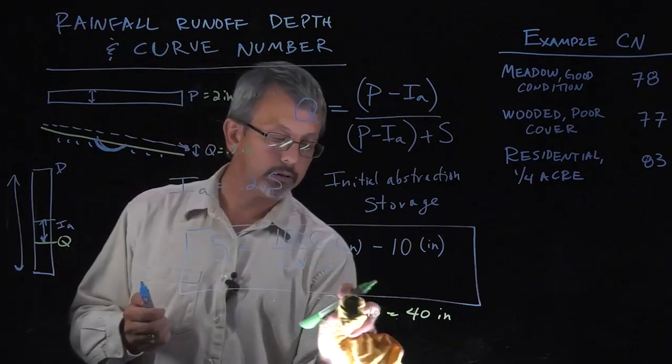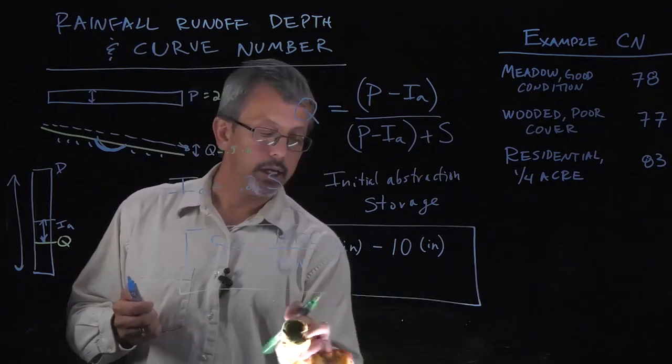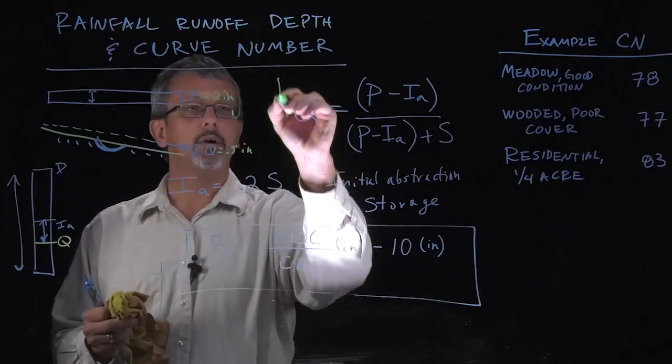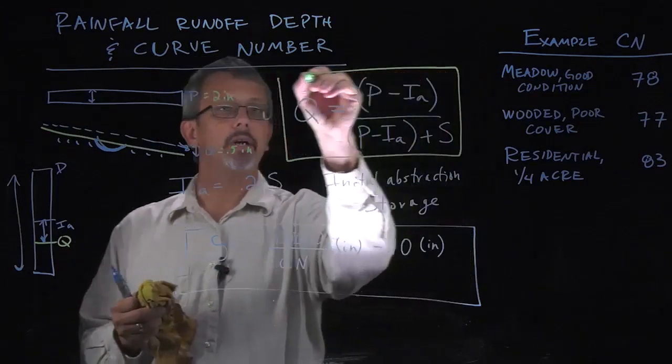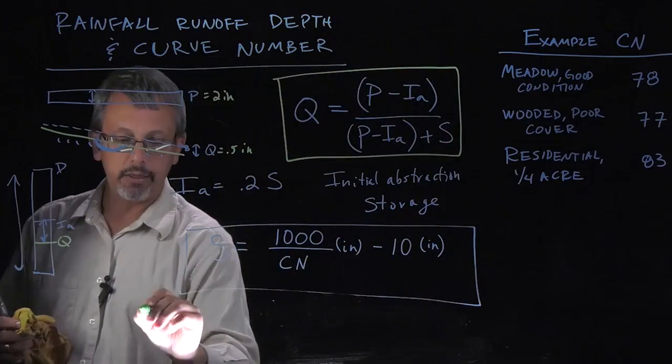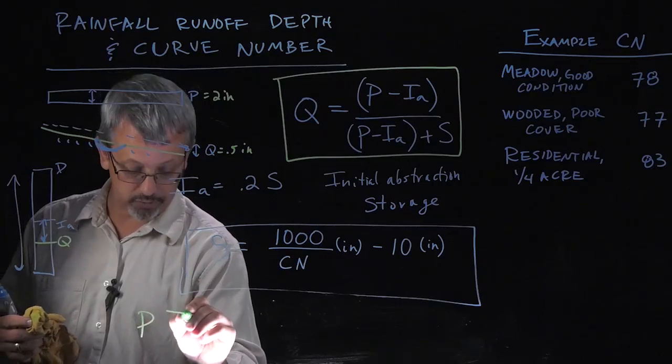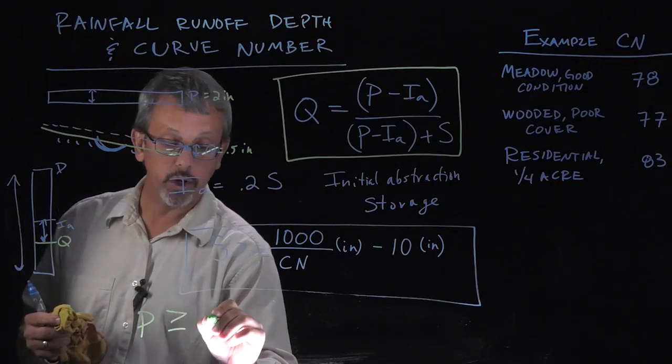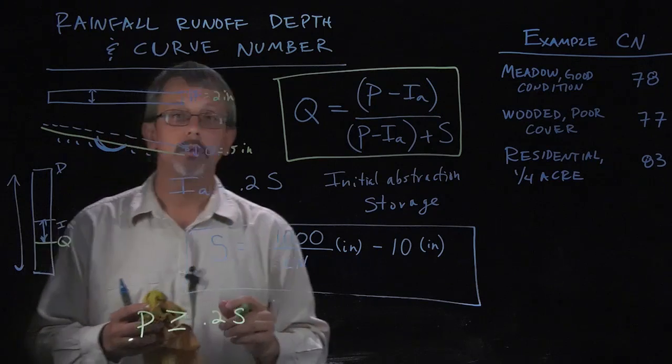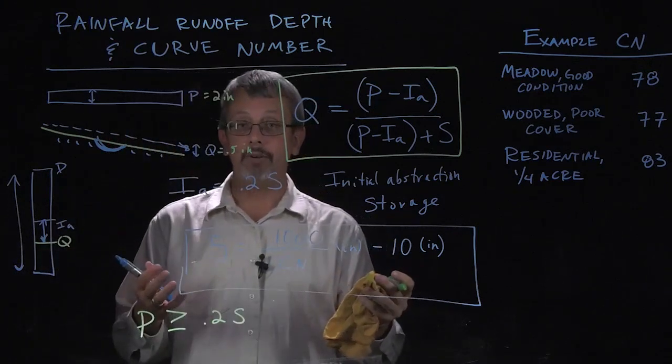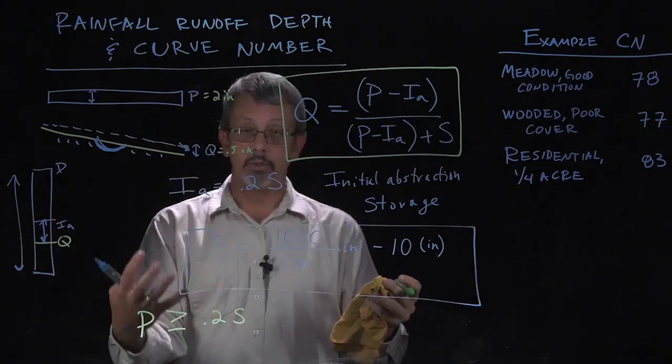There is an assumption here that before we use this relationship for runoff, the precipitation has to be greater than or equal to 20% of the storage so that you get no runoff if the precipitation is less than 20% of what the storage is.